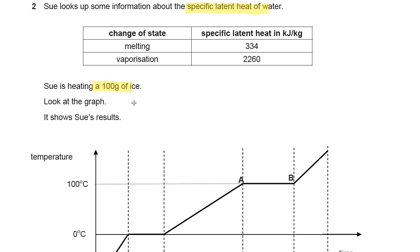Sue is heating 100 grams of ice. That's some useful data as well. Look at the graph, it shows Sue's results. We're going to be asked to do a calculation about specific latent heat and the amount of energy it takes. Let's scroll down, have a look at the graph and see what the question is expecting us to do. Then I'll give you a go at the question.